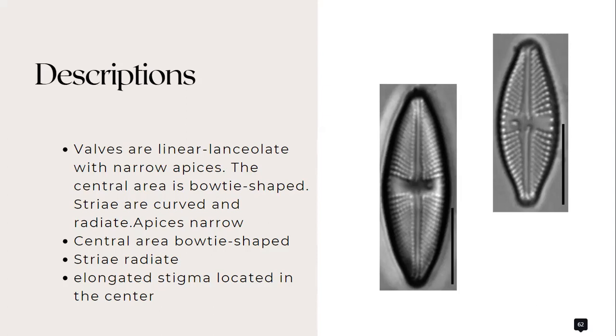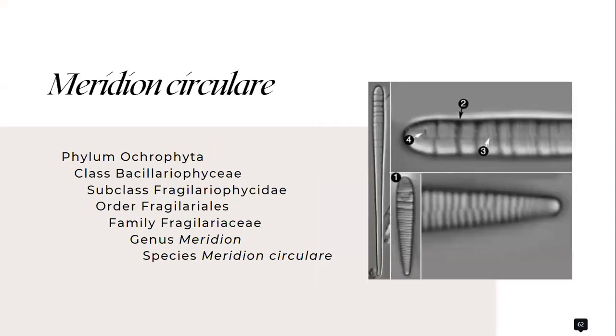Now let's move on to the third species, which is Meridion circulare. And in here, the frustules form fan-shaped colonies and are clavate in girdle view. The valves are linear clavate and asymmetric to the transapical axis and the costae present and run transversely across the valves.